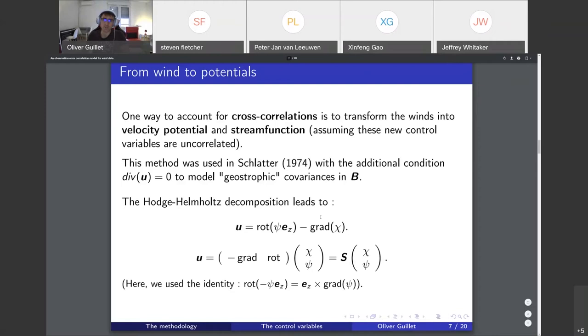The Hodge-Helmholtz decomposition leads to the following formula: u can be written as a rotational part and gradient part. For those more familiar with the vector cross product with gradient of stream function, this is actually equivalent. I like this way of writing the equation because you have two similar operators here and there, and it allows me to write this in matrix form.